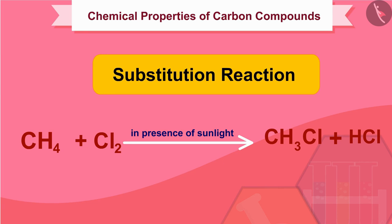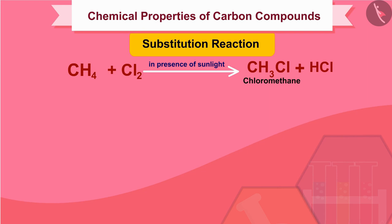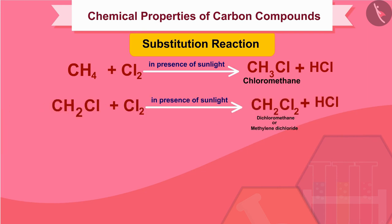In this reaction, only one hydrogen atom of methane has been replaced by a chlorine atom, and we get chloromethane. By supplying more chlorine, it is possible to replace all the hydrogen atoms of methane by chlorine one by one. In this way, we can obtain three more compounds: dichloromethane (methylene dichloride), trichloromethane, and tetrachloromethane.